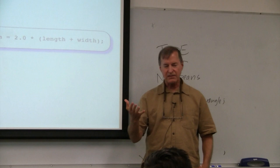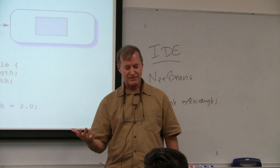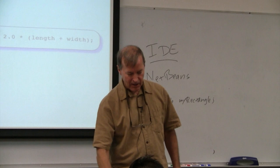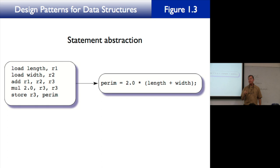In computing there are two worlds: data and programs. What we've discussed so far is the data side. Programs are statements that execute. At a low level there is what we call statement abstraction. When you write a C++ program and compile it, the compiler translates it into a lower-level language. On the left we have an assembly language sequence that the compiler produces when it translates the statement on the right.